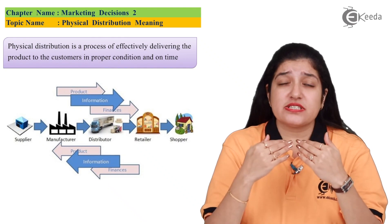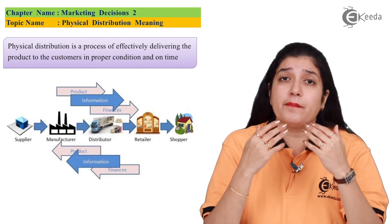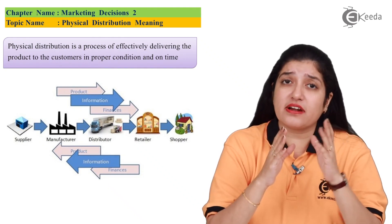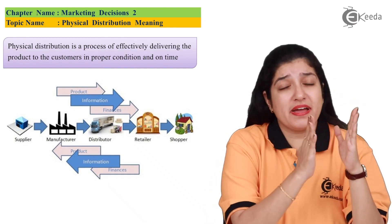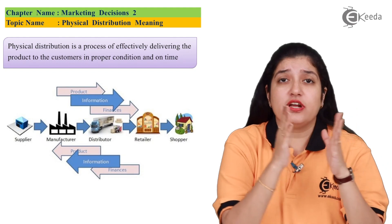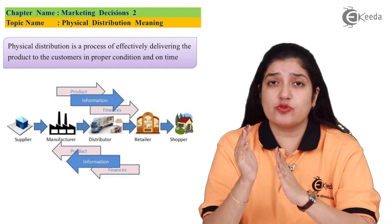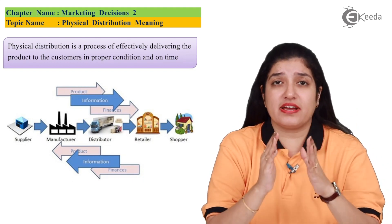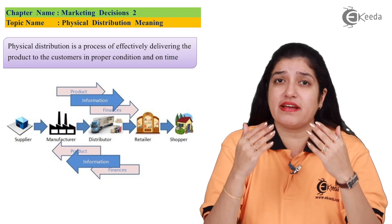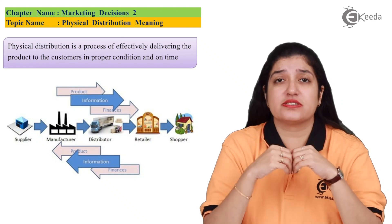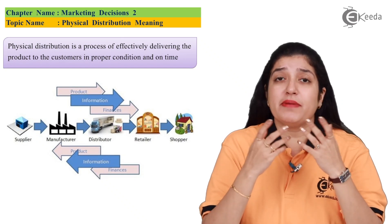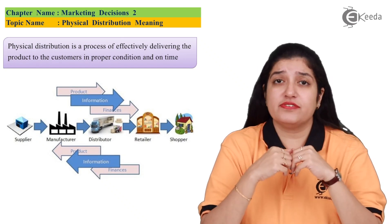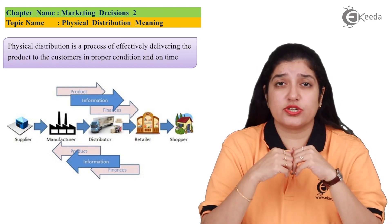Physical Distribution is a process of moving the product from the manufacturer to the consumer at the right cost, at the right time, at the right place, and in the right conditions. Many channels are used for Physical Distribution.